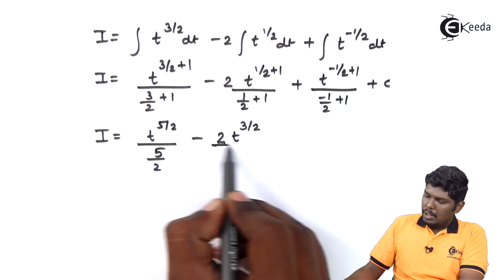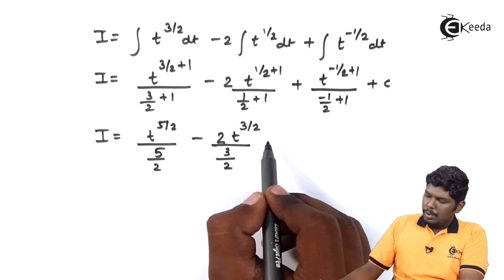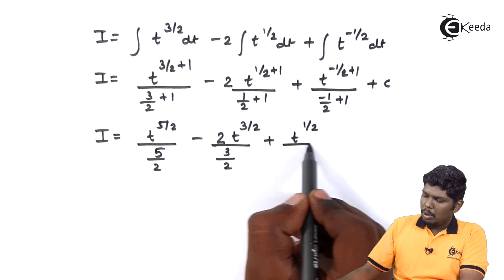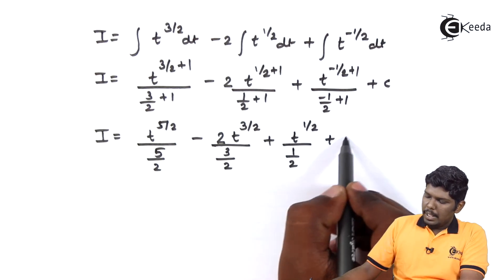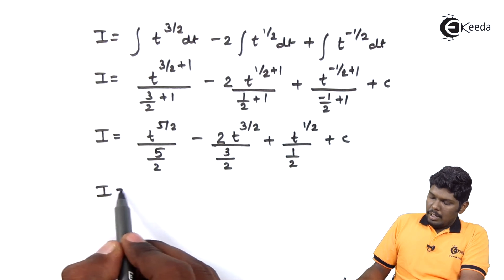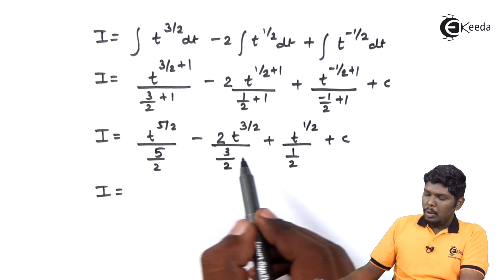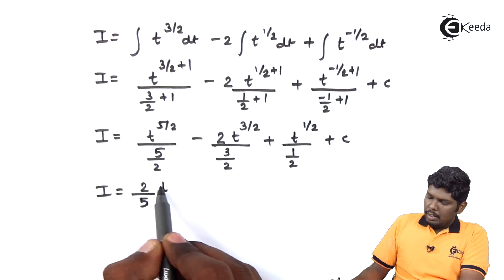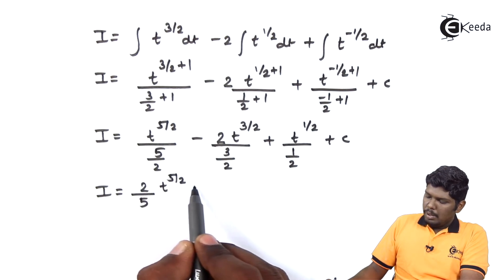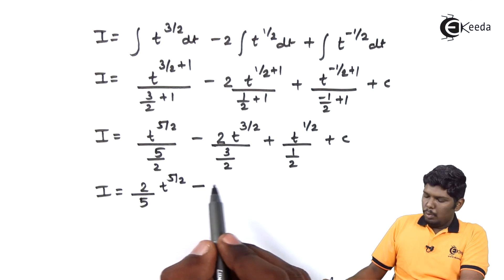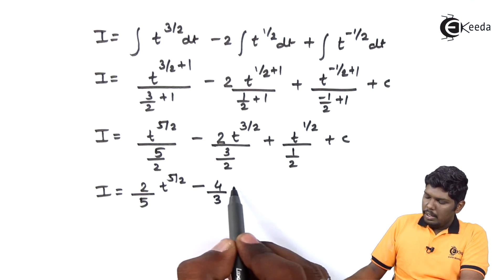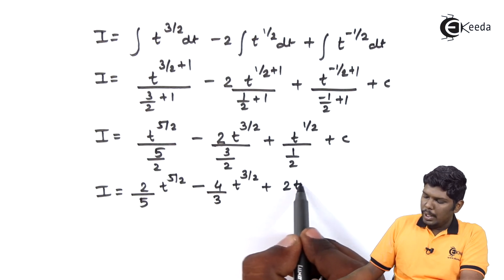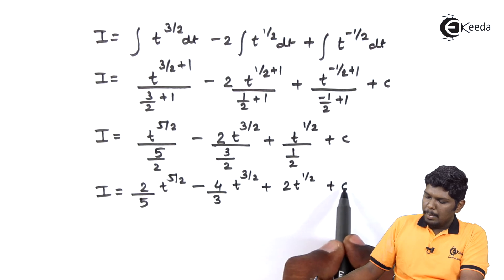Continuing: minus 2 times t raised to 3 by 2 upon 3 by 2, plus t raised to 1 by 2 upon 1 by 2, plus c. Taking reciprocals of 5 by 2, 3 by 2, and 1 by 2, that gives 2 by 5 times t raised to 5 by 2, minus 2 times 2 by 3 which is 4 upon 3 times t raised to 3 by 2, plus 2 times t raised to half, plus c.